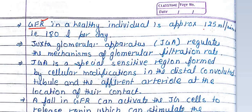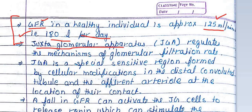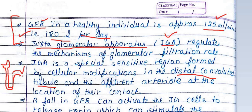In a healthy individual, GFR is approximately 125 ml per minute. This filtration rate is controlled by the JGA — Juxtaglomerular Apparatus. These units are present at the distal convoluted tubules, which is the last point of the nephron — after the Bowman's capsule, proximal convoluted tubules, loop of Henle (ascending and descending), and distal convoluted tubules. The Juxtaglomerular Apparatus is present at this junction and is quite sensitive, maintaining ionic balance.